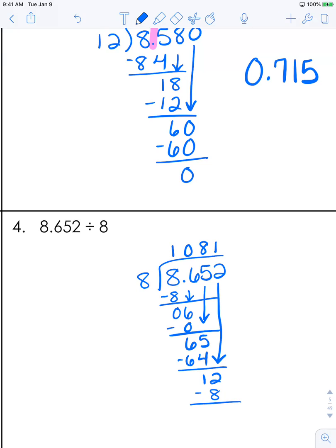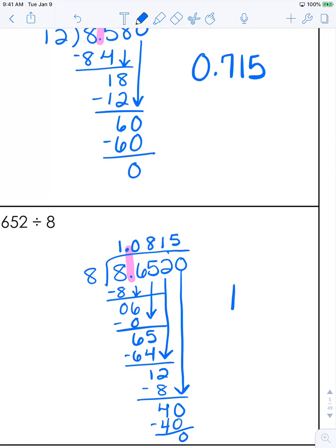Subtract. We need to add the zero and extend over here. Bring all the way down. And 8 goes into 40 five times. Float the decimal up. It goes all the way in the front of this number. Your answer is 1.0815.